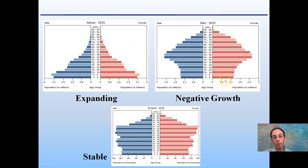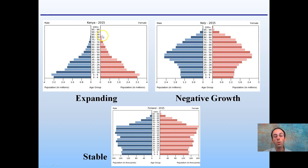Looking back from some of the previous videos, this gives examples of what an expanding pyramid may look like, a negative growth, and a stable growth. An expanding pyramid shows a very high young population but sadly very low life expectancy. Negative growth shows not a lot of young dependents, and stable growth is relatively consistent from age 60 and below.